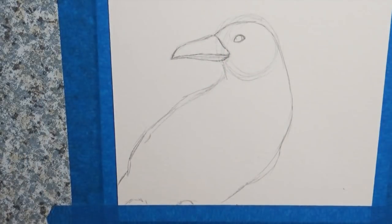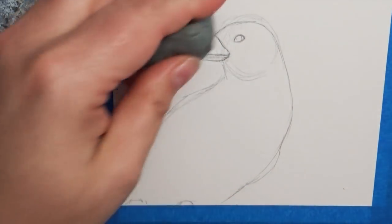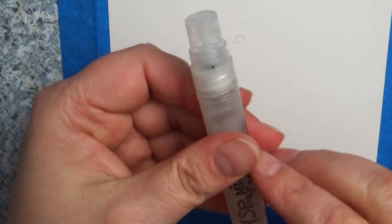I erased almost all the pencil marks so I can just lightly see as we begin to paint. Things are going to spread and go over that. You really don't have to have this drawn out so much. I just wanted to kind of have an idea where the bird was in this painting.